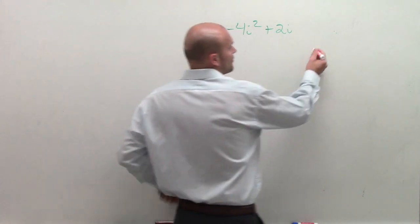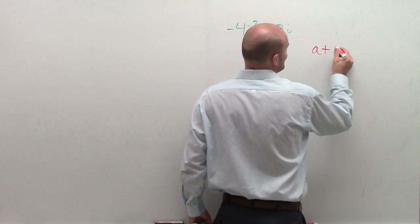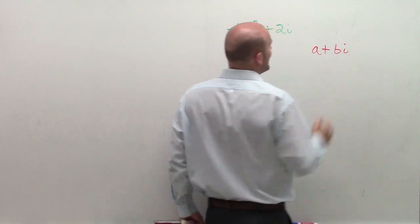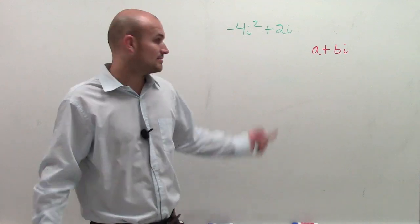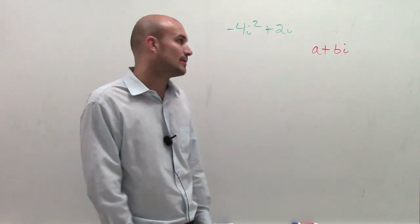And remember, standard form of a complex number can be written as a plus bi, where a represents your real part of your complex number, and bi represents the imaginary part.